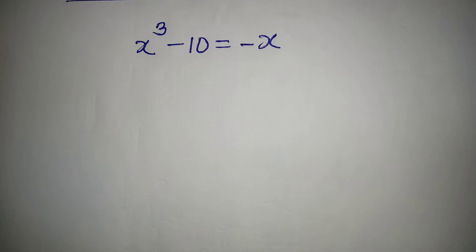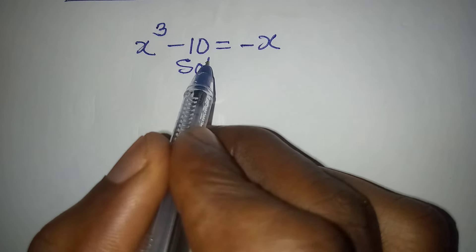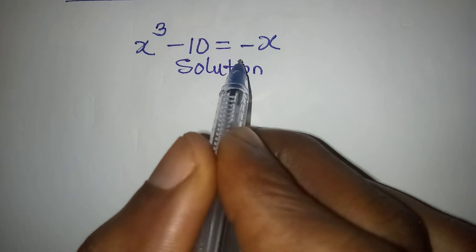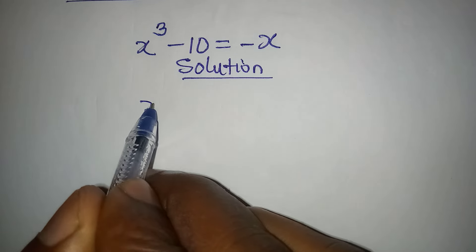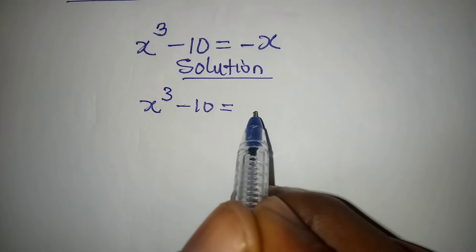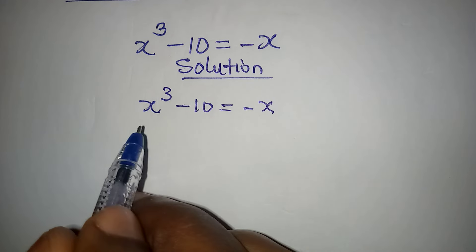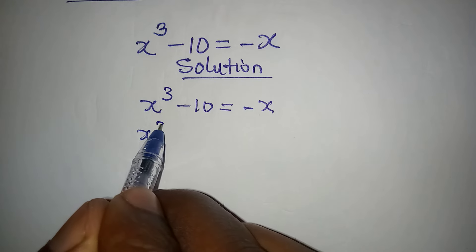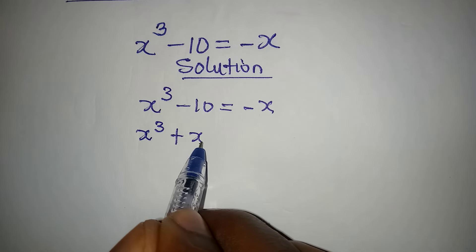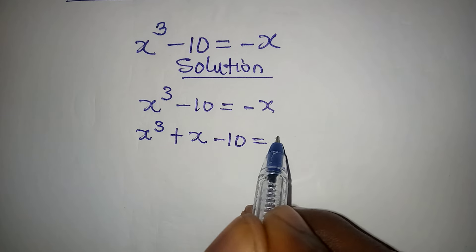Hello everyone. Let's provide a solution to this problem — do not let the arrangement confuse you. We have x to the power of 3 minus 10 equals minus x. The first step is to collect like terms, so we have x to the power of 3 plus x, and then minus 10 equals zero.